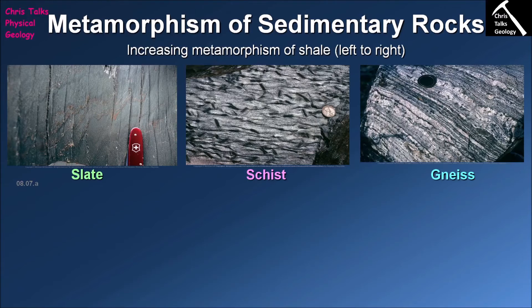If we increase the metamorphic grade even further, our schist will eventually transition to give us a gneiss. Gneiss is relatively easy to spot because of its very distinctive light and dark banding. The dark bands are dominated by ferromagnesian minerals — minerals rich in iron, magnesium, and calcium — while the lighter bands are dominated by non-ferromagnesian minerals rich in sodium, potassium, silicon, and aluminium.